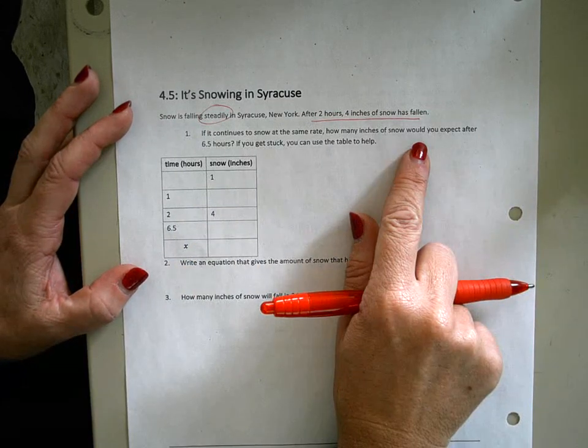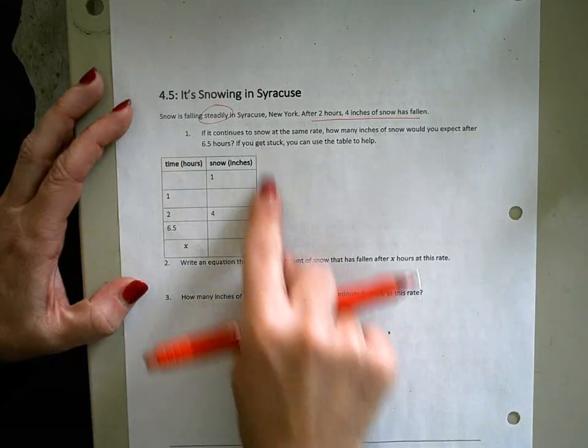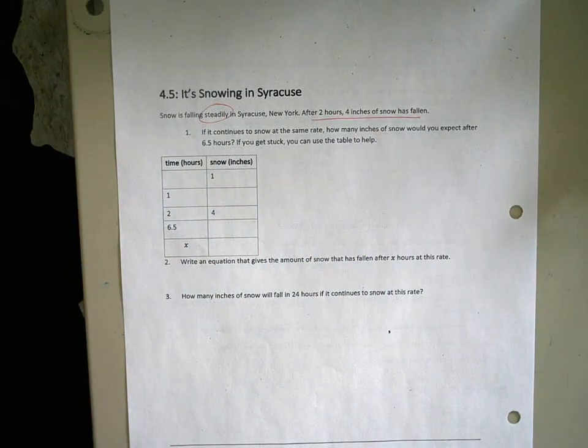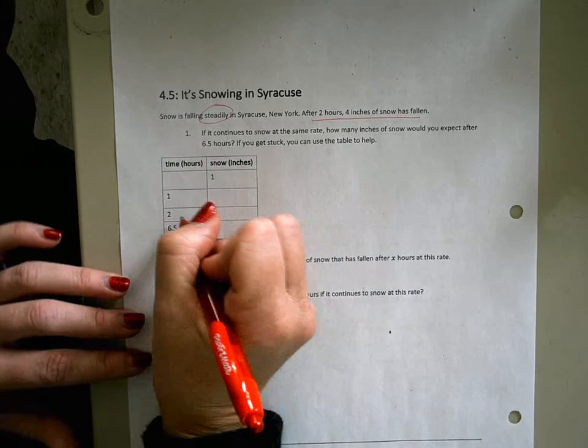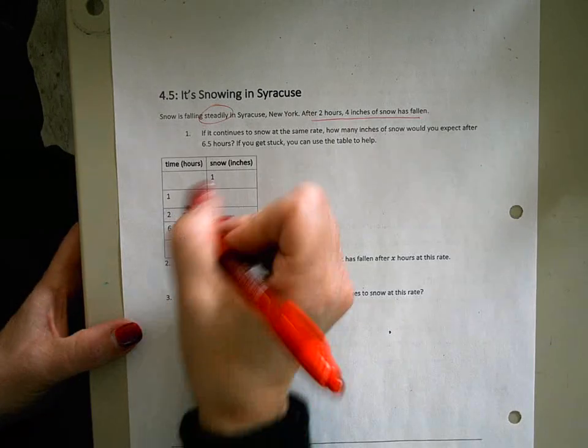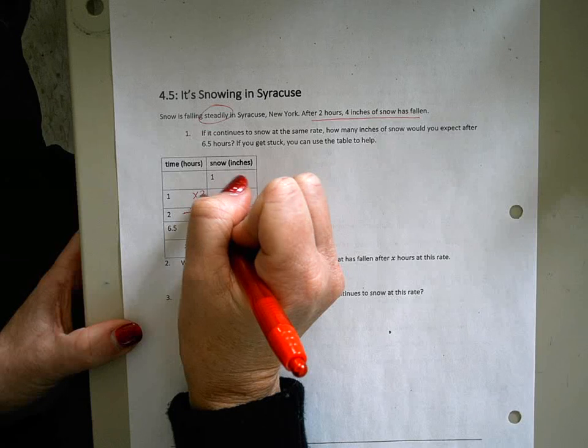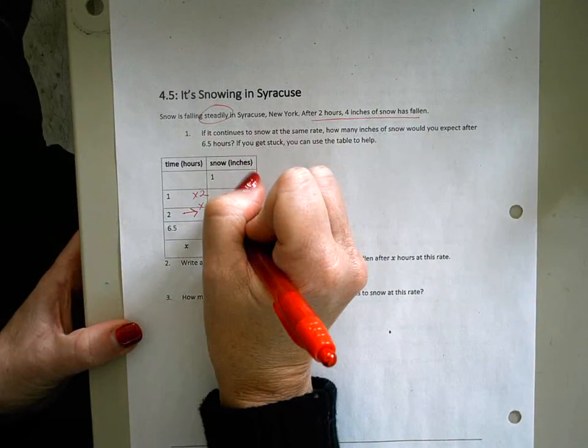The answers here are set up in this chart to help you make sense of the problem. Constant of proportionality shouldn't be too hard to find. Two times two is four, which means in one hour we're gonna have two inches of snow.